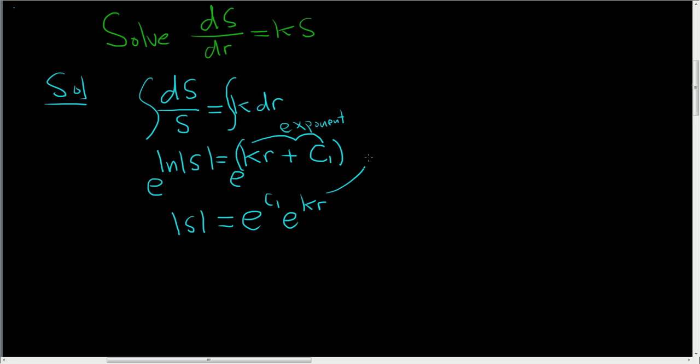Now this step here causes confusion sometimes. Just remember, e to the c1 times e to the kr is equal to e to the c1 plus kr. It's just the properties of exponents. For example, x squared times x cubed is x to the 2 plus 3. Same thing.